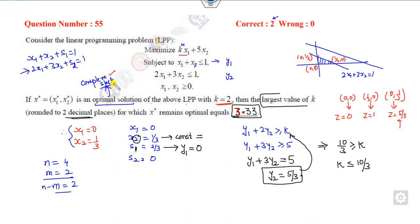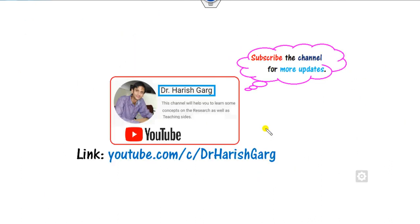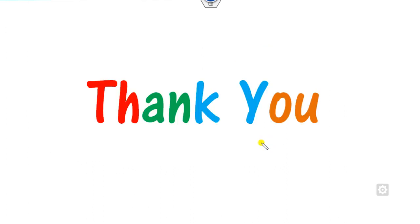Remember the complementary slackness condition. You may watch the previous videos on GATE 2018, 2019, 2020, and 2021 where we discussed this in detail. This is how you can solve these four questions and easily get 8 marks within a few minutes. I hope you enjoyed this session. You can follow this link for finding various videos. Best of luck, students.